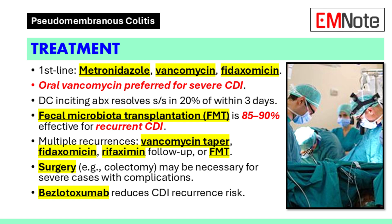Two oral fecal microbiota products, Rebiota and Vowst, have been approved for use in the United States. For a first recurrence, oral vancomycin or fidaxomycin are recommended. For multiple recurrences, options include vancomycin taper and pulse, fidaxomycin, or rifaximin follow-up with vancomycin.